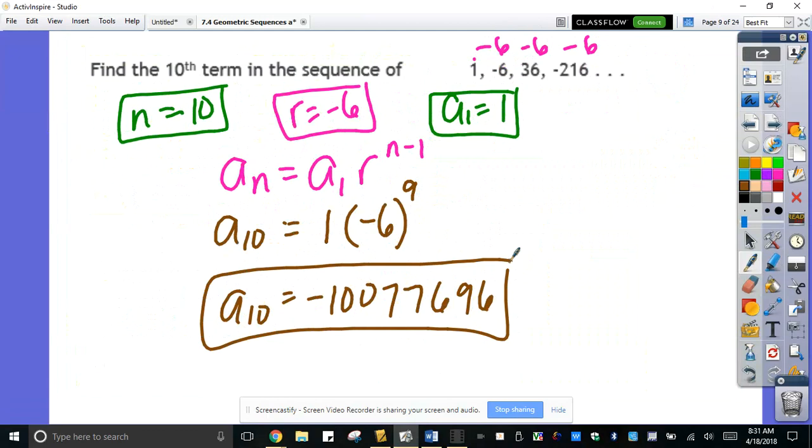So the 10th term is negative 10,077,696. Sometimes if you don't put parentheses, it might lead you to a wrong answer, especially if the exponent is an even number. For this case here, you will get the same answer because it's an odd.